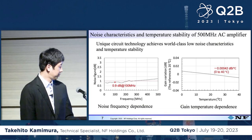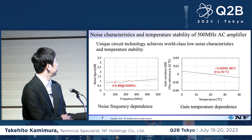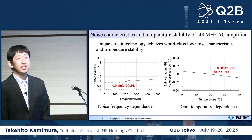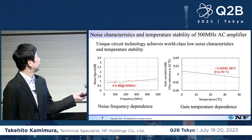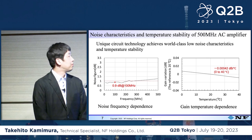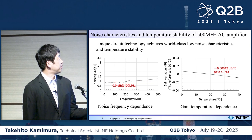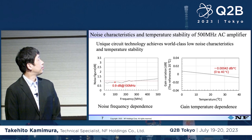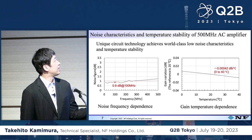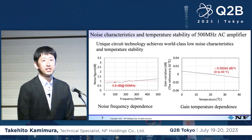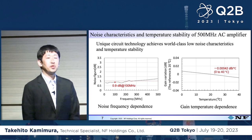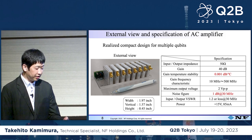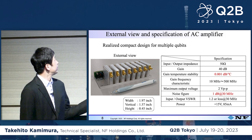Now I'd like to explain the performance based on these technologies. On the left-hand side is the noise frequency dependency of the amp output — the x-axis is frequency and the y-axis is noise figure. On the right-hand side is the gain temperature dependency — x is temperature and y is gain variation. The gain is 40 dB, which is very high. But the temperature stability is 0.0004 dB per degree centigrade, so it is very stable. With our original technologies, we are achieving very high stability and low noise features.